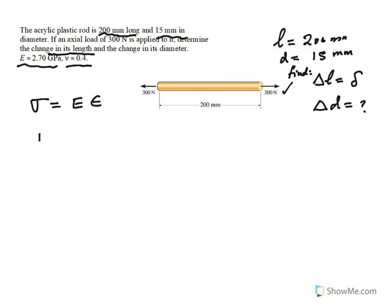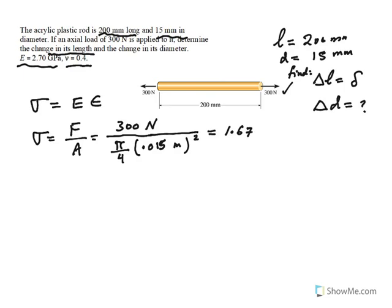Now, if I could find sigma, which is simply load divided by area, that's very easy. So take the 300 Newtons and divide it by the area, which would be pi R squared or pi over 4 diameter squared. Remember, we've got to change the millimeters. So 0.015 meters squared. We'll get the resulting answer in Pascal. In this case, it would be about 1.678 times 10 to the 6th Pascal or 1.678 megapascal. So that's the normal stress in this rod.